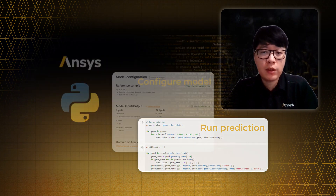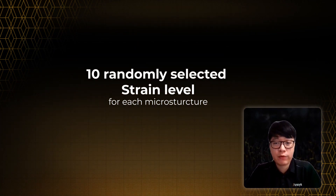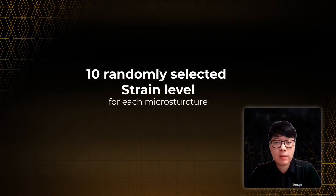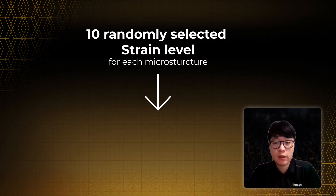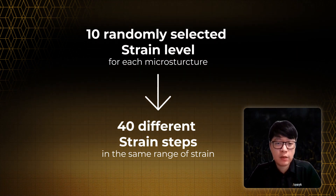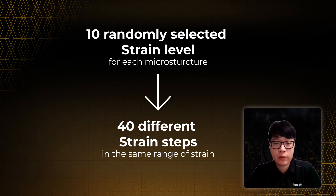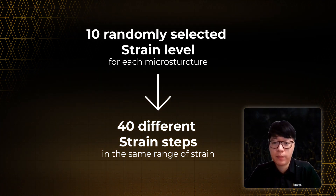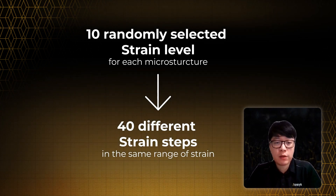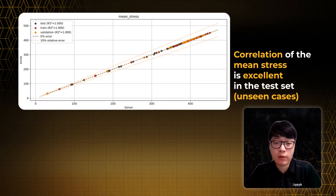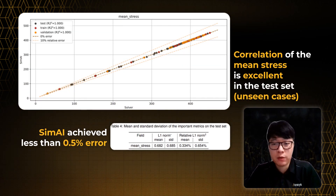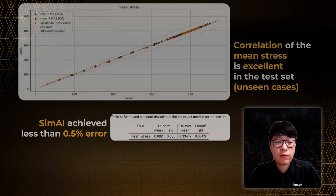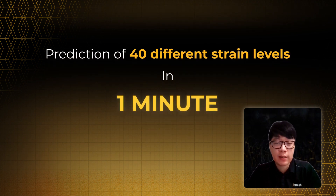While we only supply 10 randomly selected strain levels for each microstructure in the training set, we asked the SimAI model to generate predictions at 40 different strain steps in the same range of strain, to showcase the interpolation capability of our SimAI model. The predicted stress-strain curves show close agreement with the simulation on unseen microstructures, even at unseen strain levels, and the prediction at 40 different strain levels can be done in a matter of minutes.